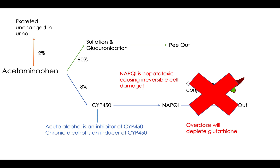But if you overdose on acetaminophen and you're a chronic alcoholic, chronic alcohol is going to be an inducer of CYP450. That would actually cause even more damage, inducing all of the acetaminophen that normally would have gone through the other two pathways to come to the CYP450 system instead. So chronic alcoholics will actually have even higher NAPQI levels, causing even more hepatotoxic problems.